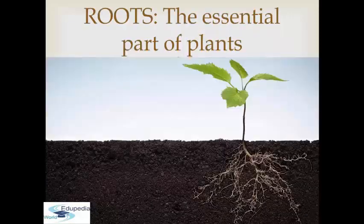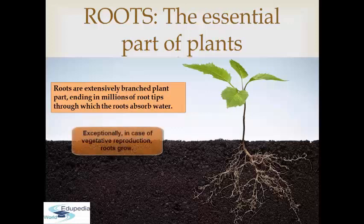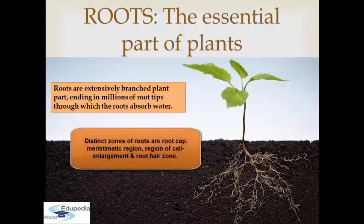Roots are extensively branched plant parts ending in millions of root tips through which the roots absorb water. Almost all plants grow in soil. If plant roots are cut and derooted and then the plant is fixed back into the soil, the plant would slowly dry up and die. Roots have the following distinct zones: root cap, meristematic region, region of cell enlargement, and root hair zone.